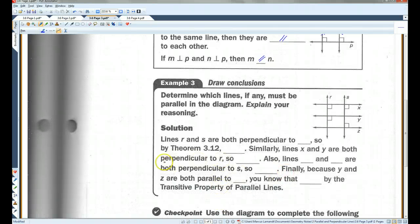Determine which lines, if any, must be parallel in the diagram. Explain your reasoning. Lines R and S are both perpendicular to X. As you can see here, R is perpendicular to X and S is perpendicular to X. So by theorem 3.12, R is parallel to S.